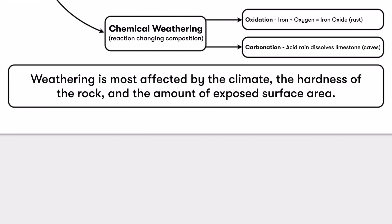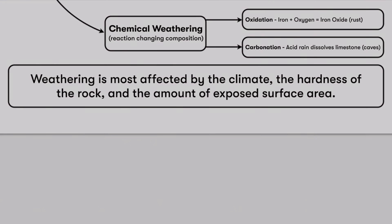In this video, we took a look at the different types of weathering along with basic definitions of weathering, erosion, and deposition, and then at what affects weathering. Coming soon, another video will go into details about the processes of erosion, transportation, and deposition — the dropping off of sediment. Keep your eye out for those. Thanks for watching.